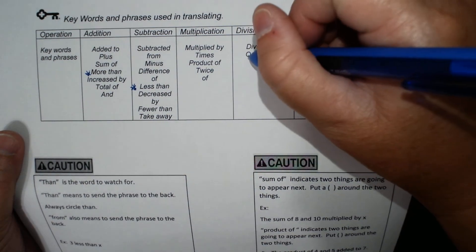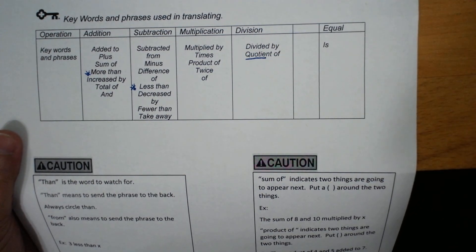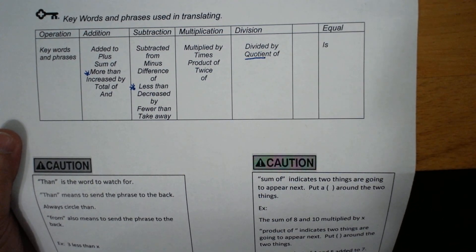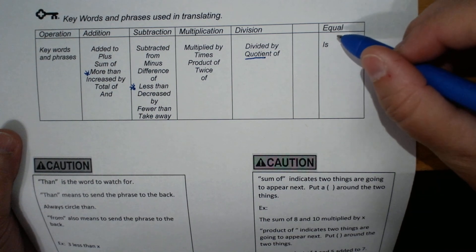Division: divided by, quotient. This is the word that gets people because they forget that that means division. And then equal is, is.